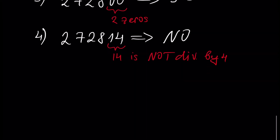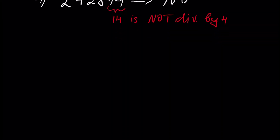Next, let's prove this result. We assume we have a number ABCD. Of course it can be a bigger number — ABCDEFG and so on — but for simplicity assume we have a four-digit number. Let's write powers of 10 for easily writing the decimal representation of this number.